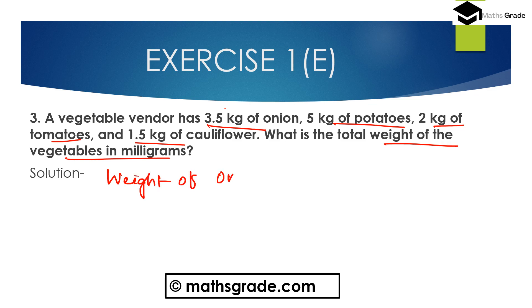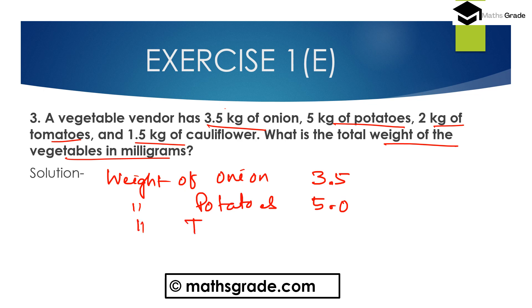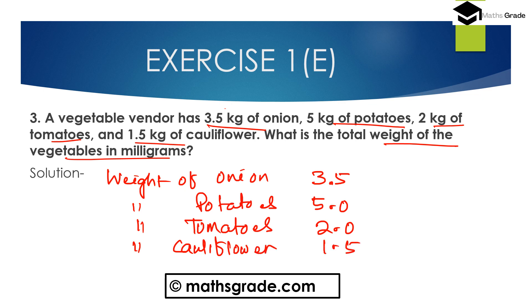Weight of onion is 3.5 kg, weight of potatoes is 5 kg, weight of tomatoes is 2.0 kg, and weight of cauliflower is 1.5 kg.